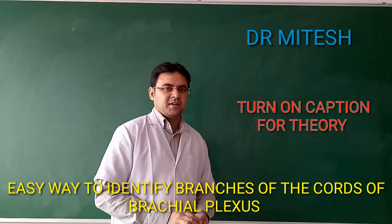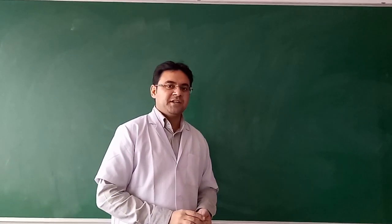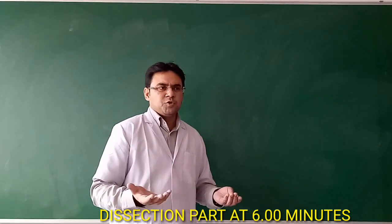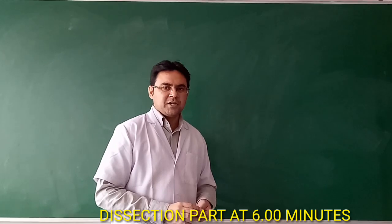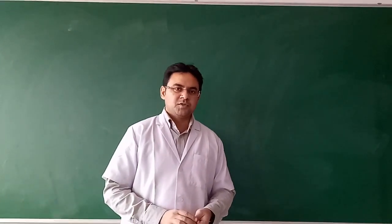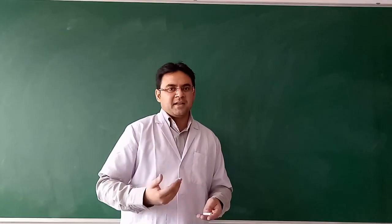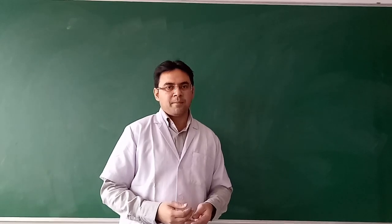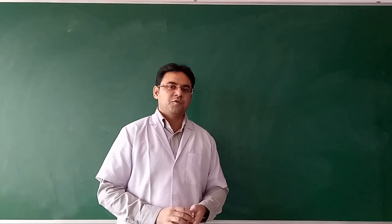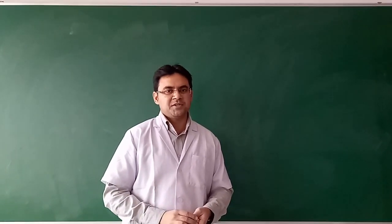Hello everyone. I am going to demonstrate how to identify the different branches of the brachial plexus. We have usually learned the brachial plexus in the traditional way: it is formed by the ventral rami of roots C5 to T1. C5 and C6 unite to form the upper trunk, C7 continues as the middle trunk, C8 and T1 join to form the lower trunk. Each trunk divides into anterior and posterior divisions.